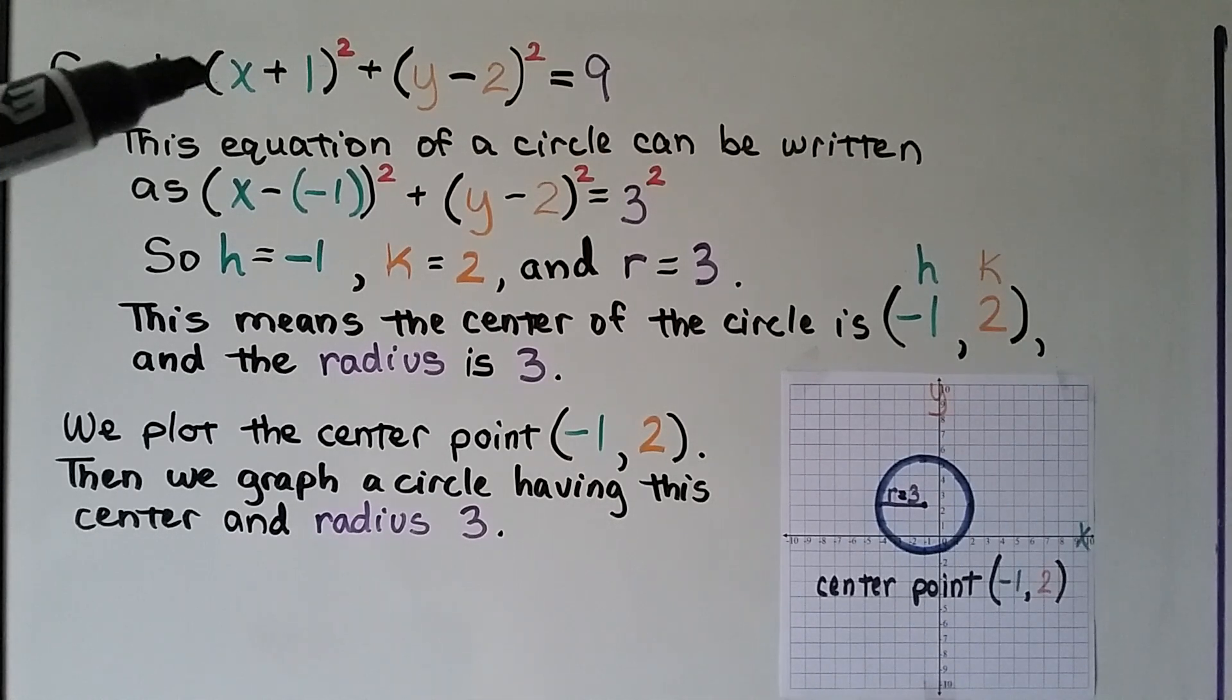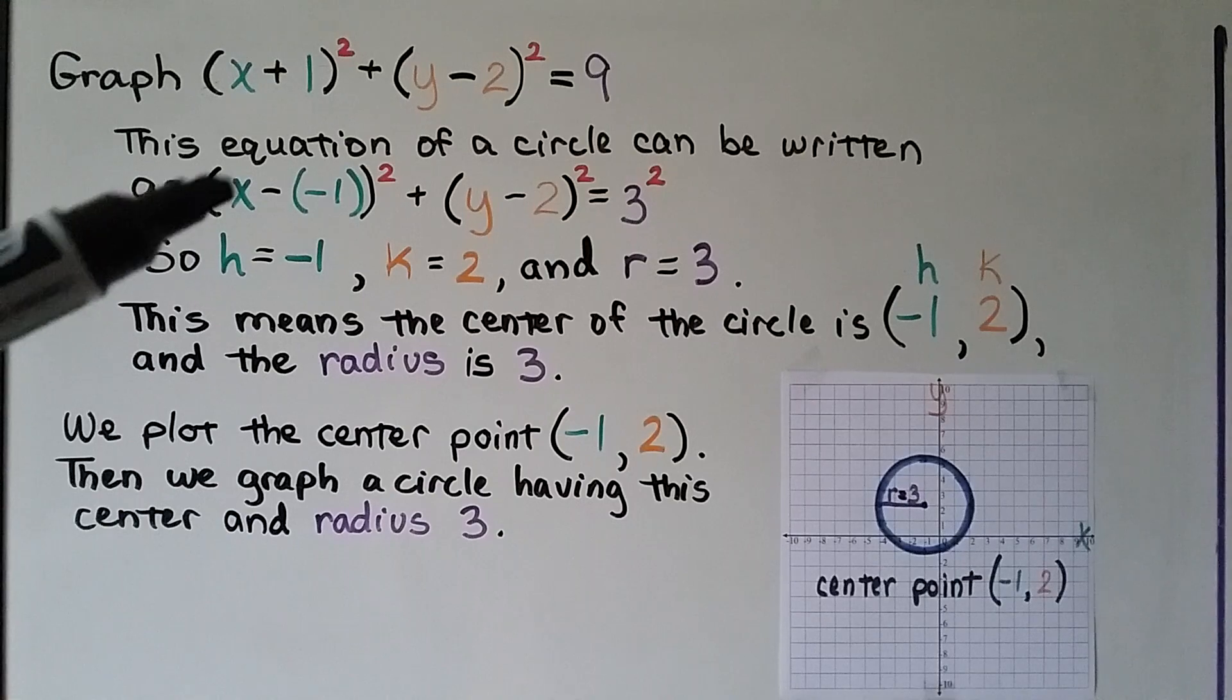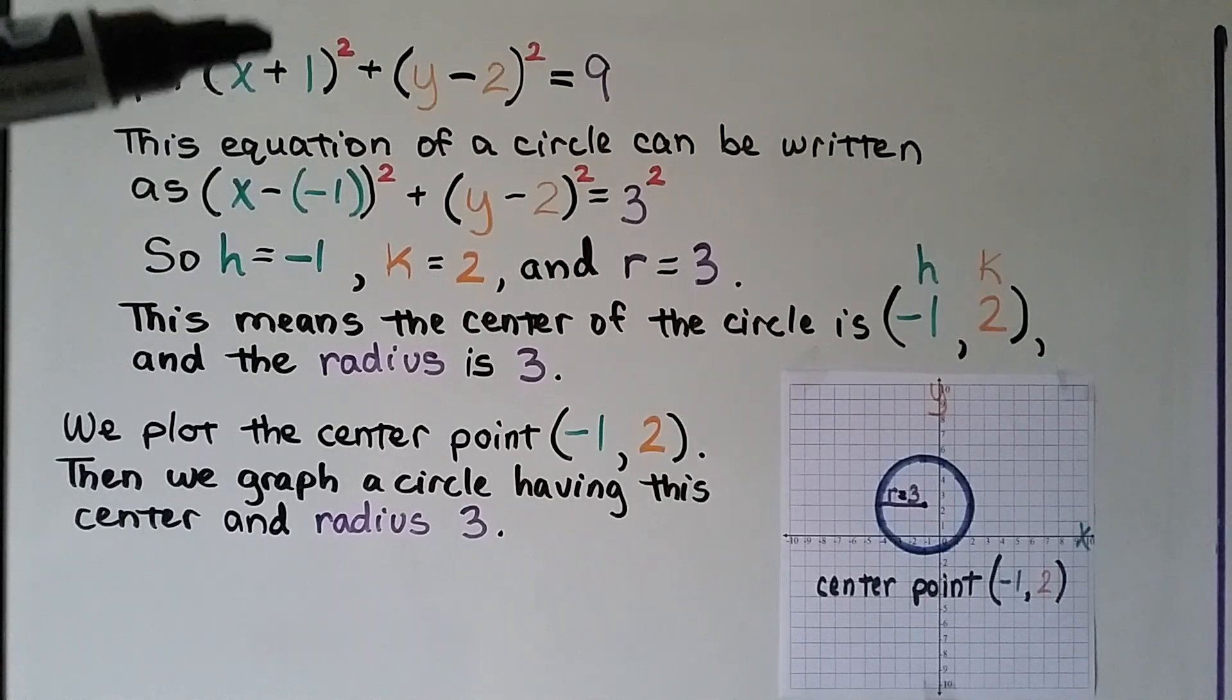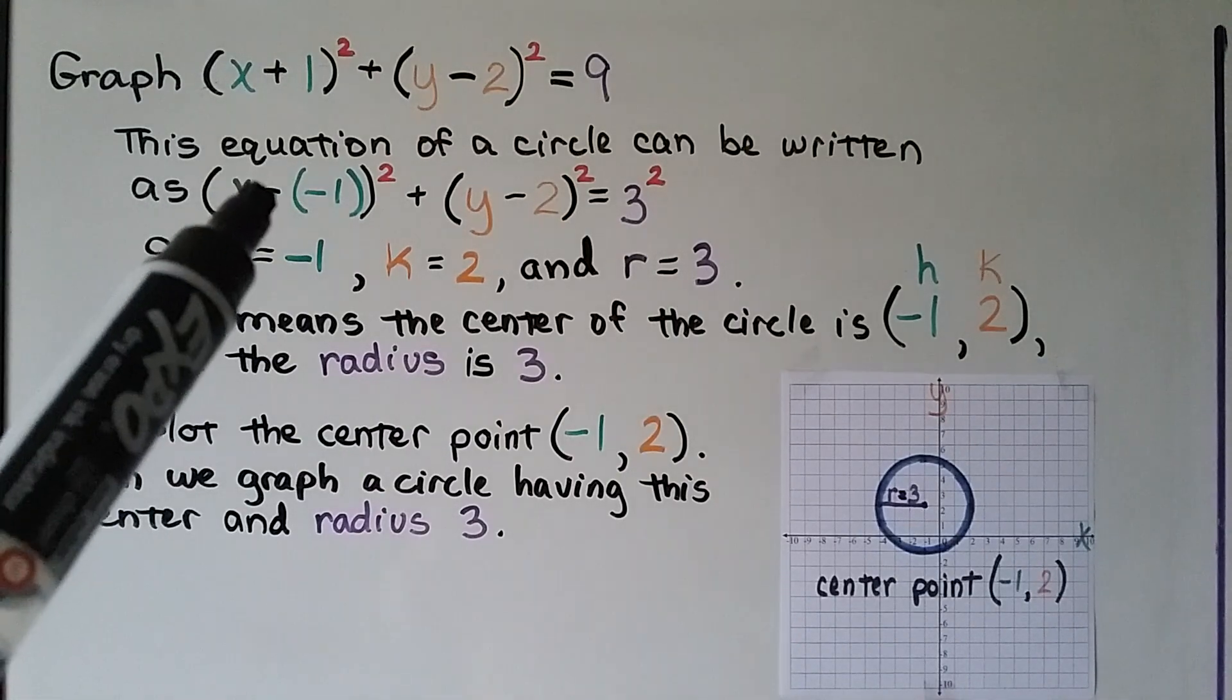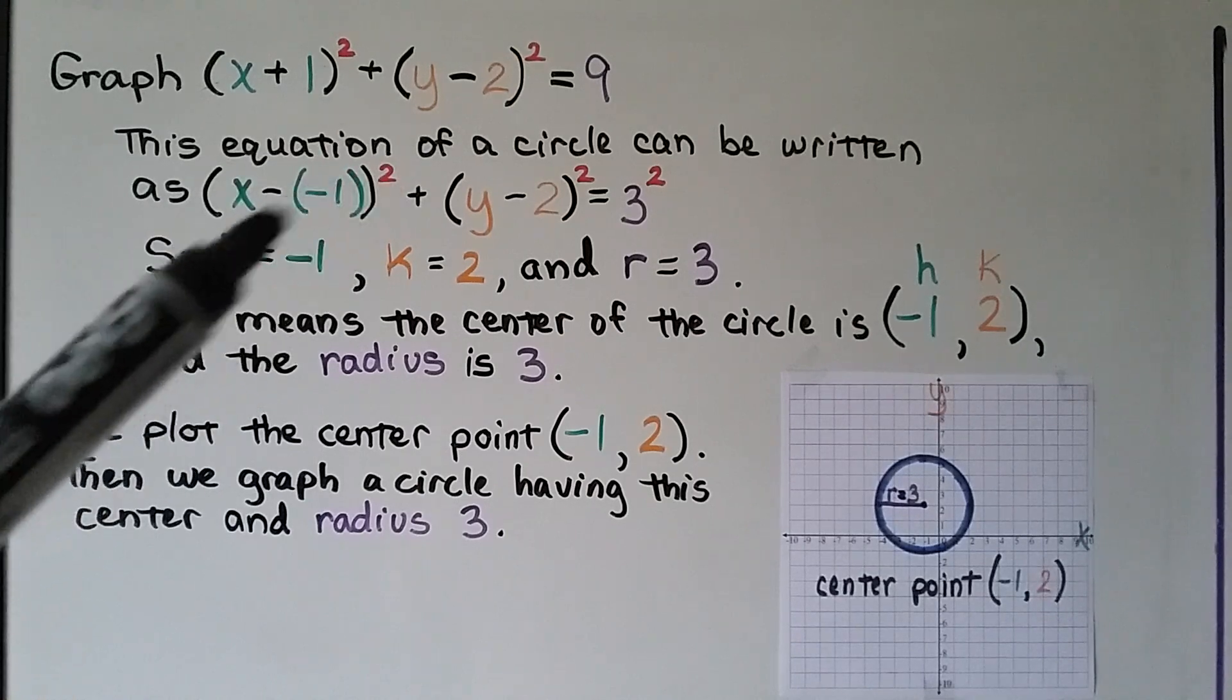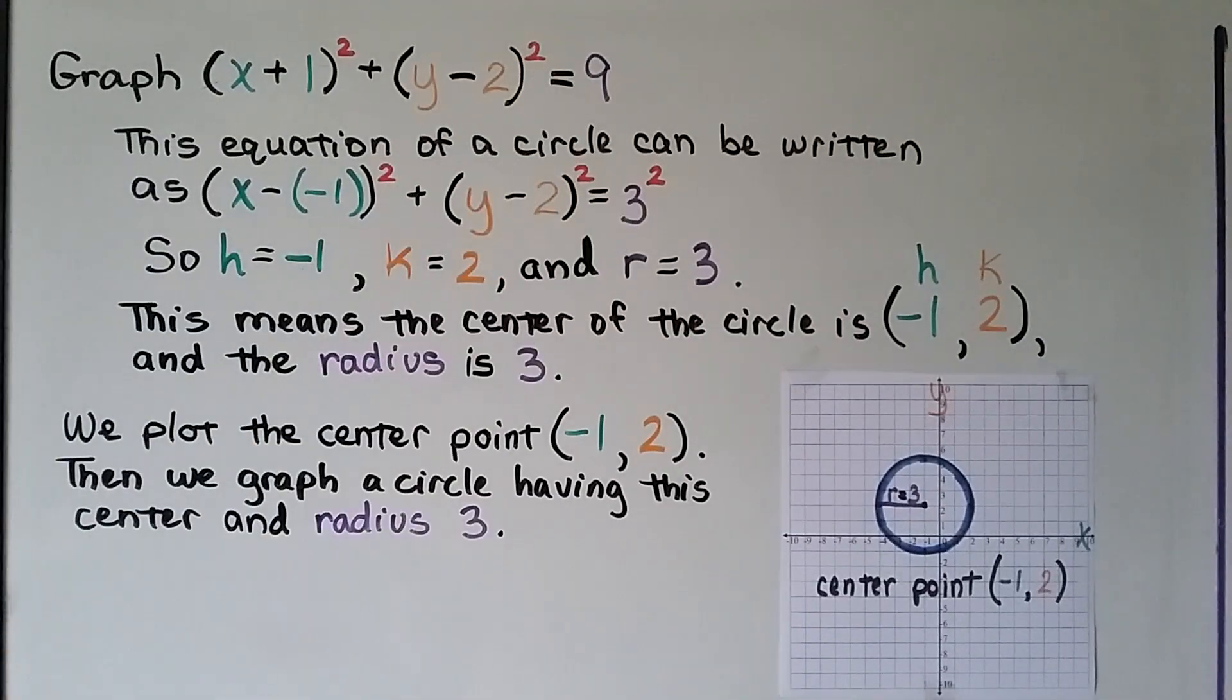Now it says graph x plus 1 squared plus y minus 2 squared equals 9. And this equation of a circle can be written as x minus a negative 1 squared. So think of this line, this equation, as this one before it became this way. So this would be like step 1 and that would be step 2 because if we're subtracting a negative, we can add the opposite. So this equation became this equation. See how we're kind of going backwards? And so we have x minus negative 1 squared, which is the same thing as this, plus y minus 2 squared. And if that's a 9, we can write that as a 3 squared.